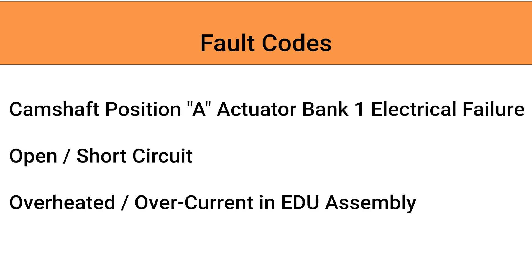Specific faults for the VVTIE can be set — for example, actuator circuit faults. The ECM will set a fault code when the target duty cycle does not match the actual duty cycle. The ECM monitors circuit current to determine the actual duty cycle.